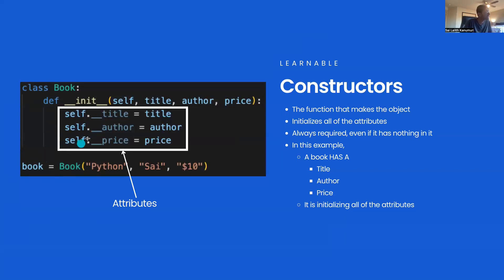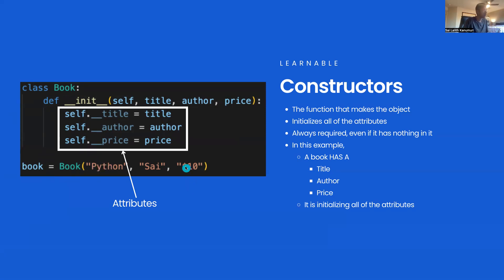A class is a very general thing — 'Book' is general. It has title, author, and price. But an object is very specific. For example, a calculus textbook. Here the title is 'Python', the author is 'Sai', and the price is ten dollars. So `self.__title` equals 'Python', `self.__author` equals 'Sai', and `self.__price` equals ten dollars.